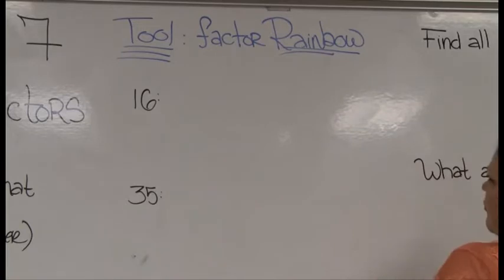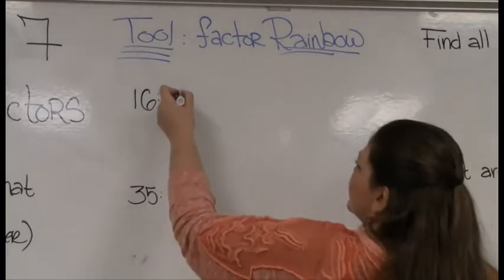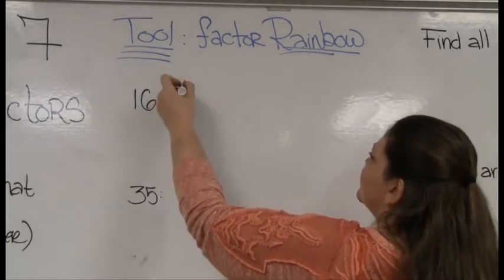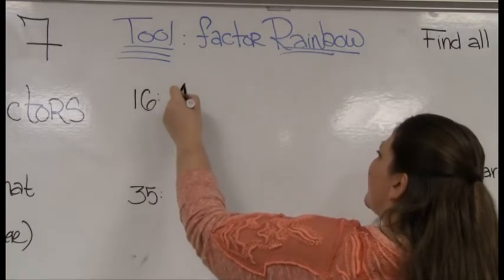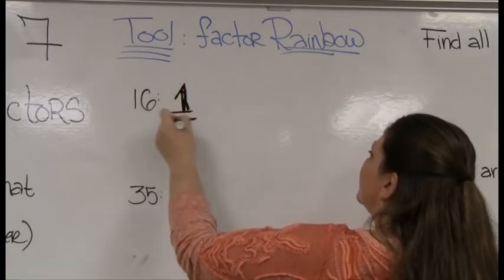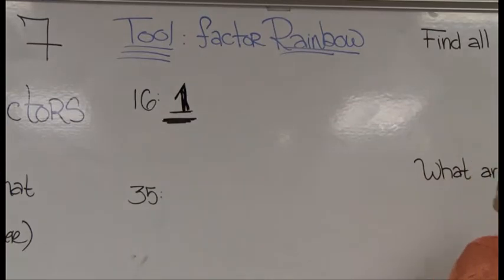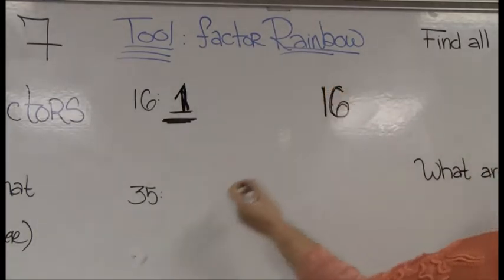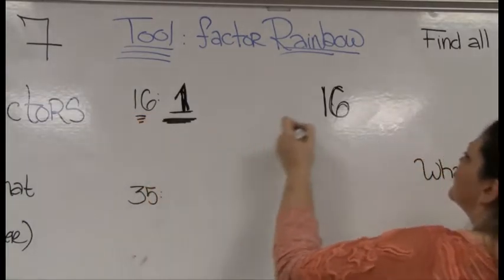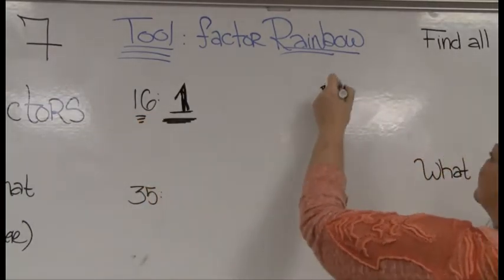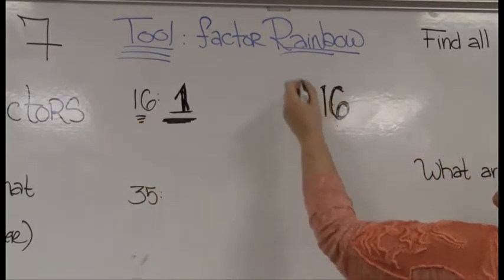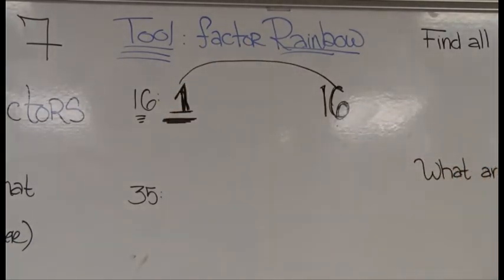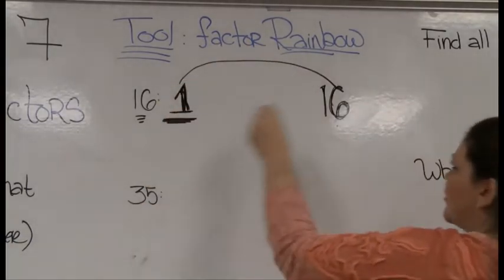The first thing you need to know is that a factor rainbow always, always, always starts with the number 1 — it doesn't matter what number I'm factoring, I always start with 1. And it always, always, always ends with the number itself. Since I'm looking at 16, my rainbow ends with 16. This is the first arch of my rainbow.